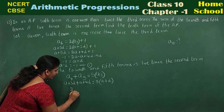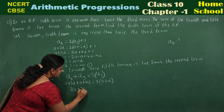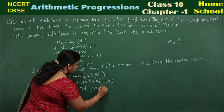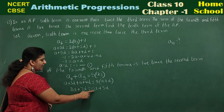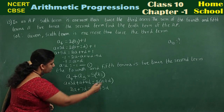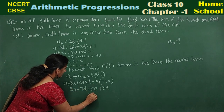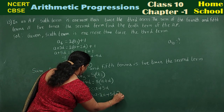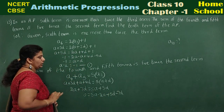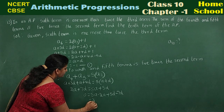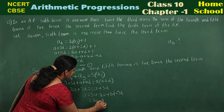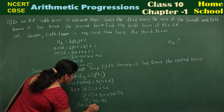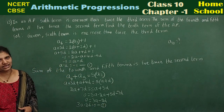A plus A gives 2A, and 3D plus 4D gives 7D, equals 5A plus 5D. Bringing terms across: 5A minus 2A is 3A, and 5D minus 7D is minus 2D, equal to zero. Rewrite this: 3A minus 2D equals 0. Mark this as the second equation.